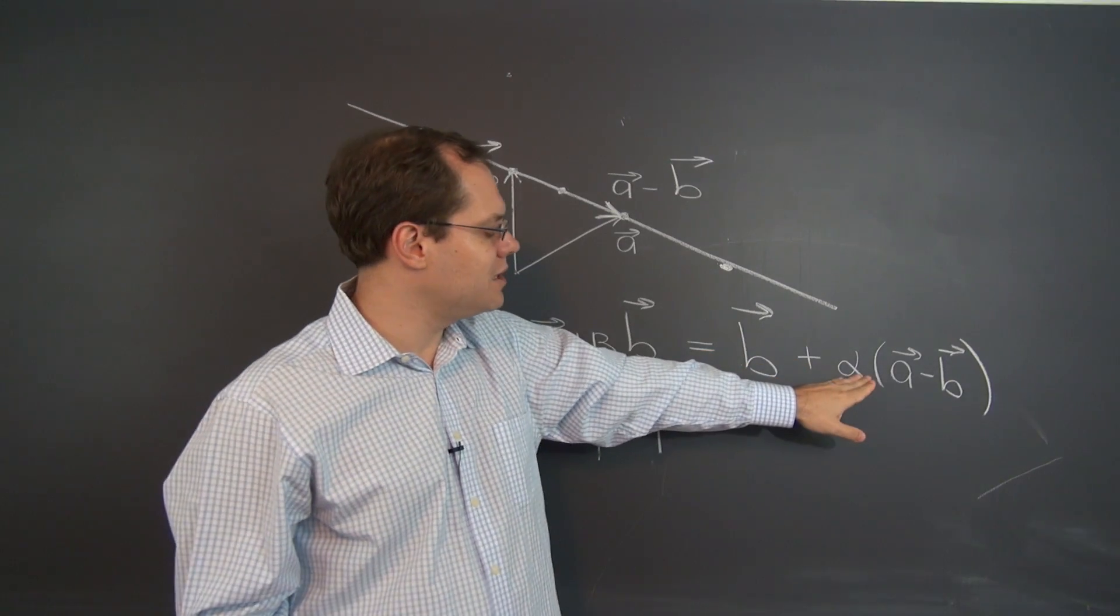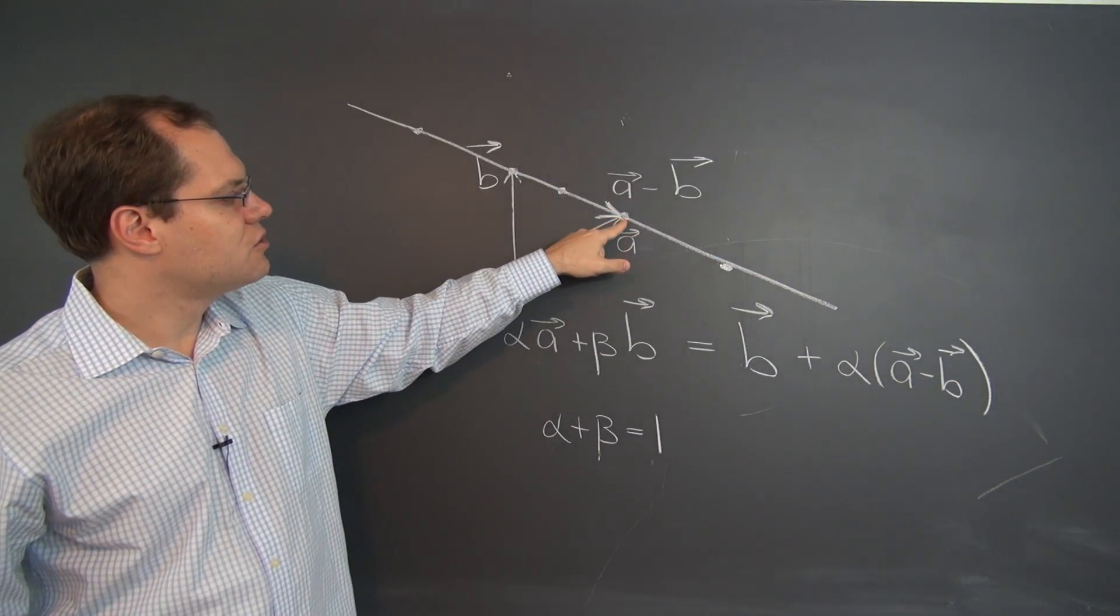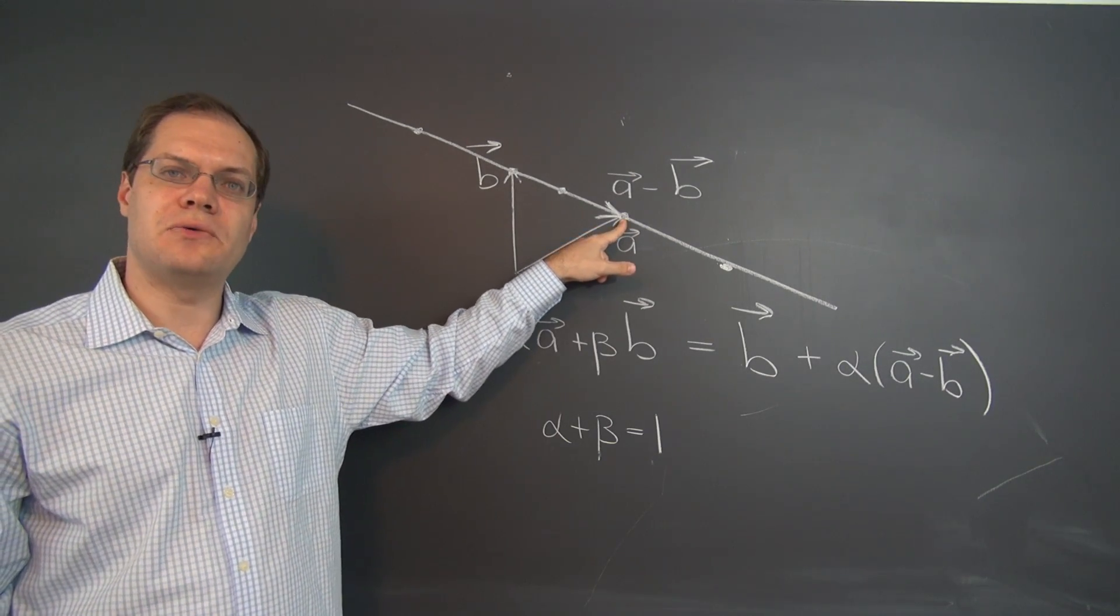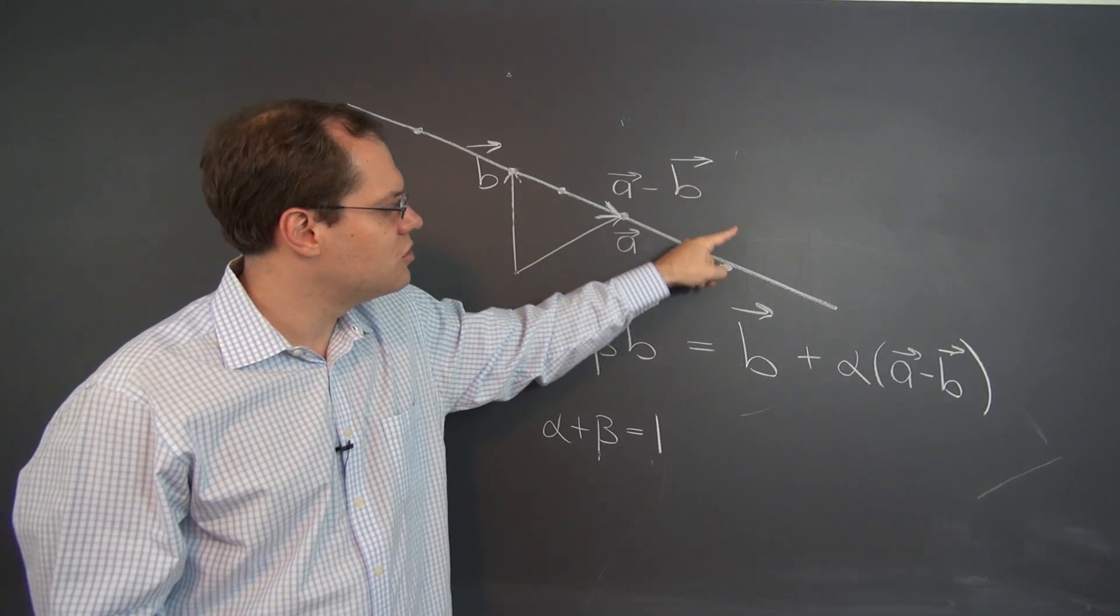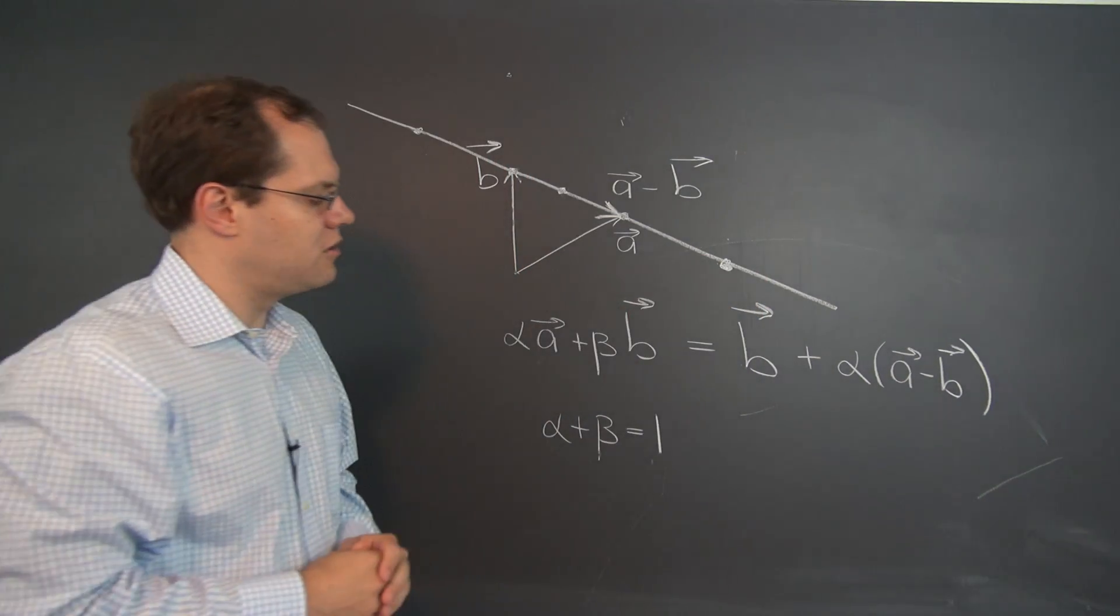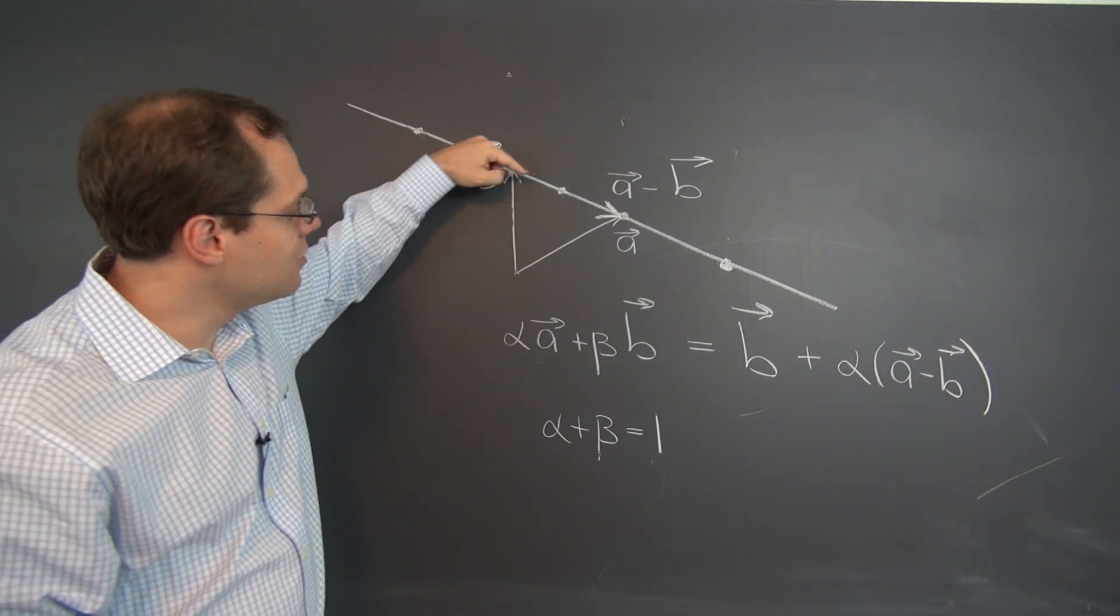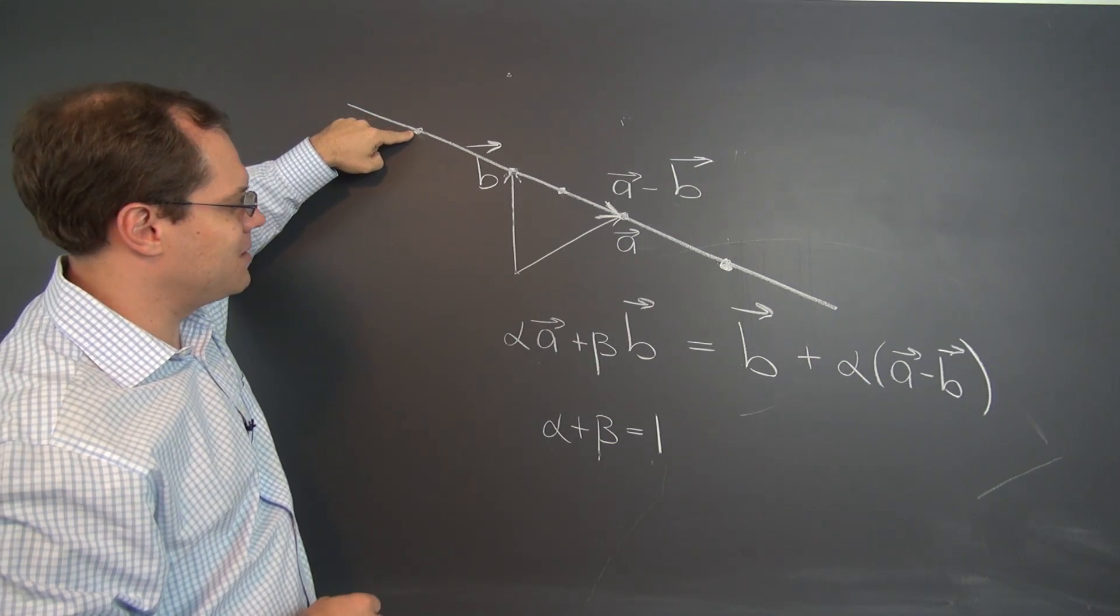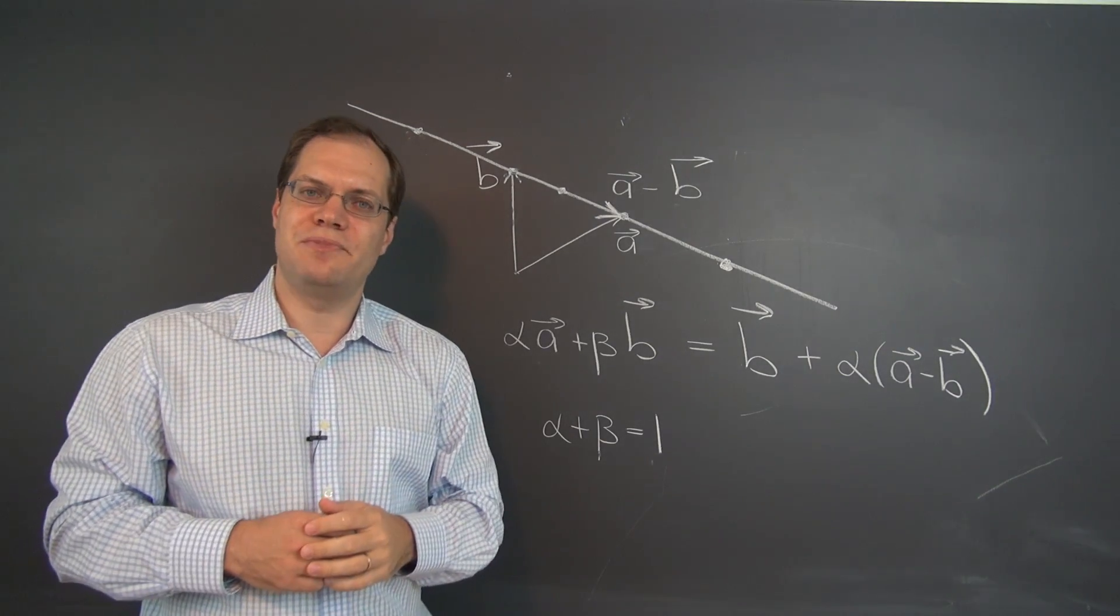So for example, when alpha was 1, it just adds A minus B to B and we land right at A, as we did before for alpha equals 1. And when alpha equals 2, we're going to start here, but take 2 of A minus B. And we're right here, just as before. And if we take alpha equals minus 1, we'll just slide in the opposite direction along the vector A minus B. And we take one amount of A minus B, one unit of A minus B, and we'll end up right here, just like we did before.